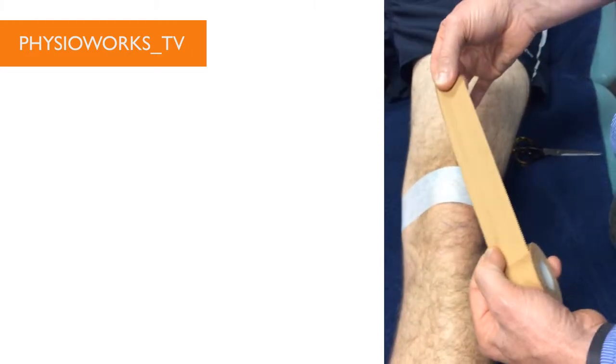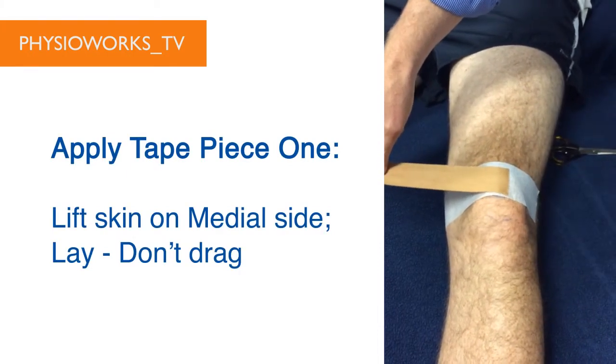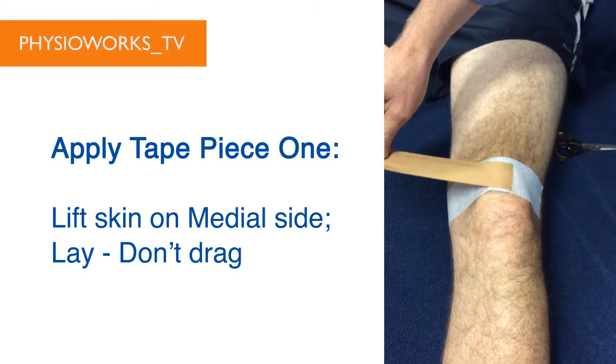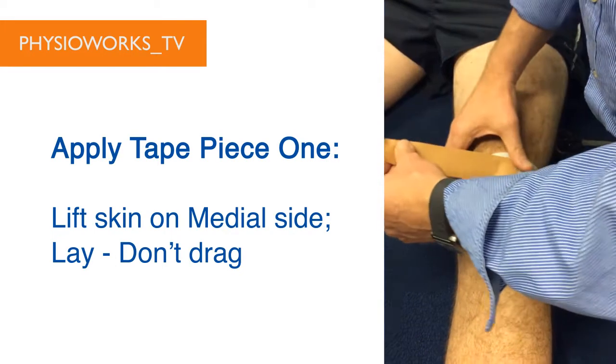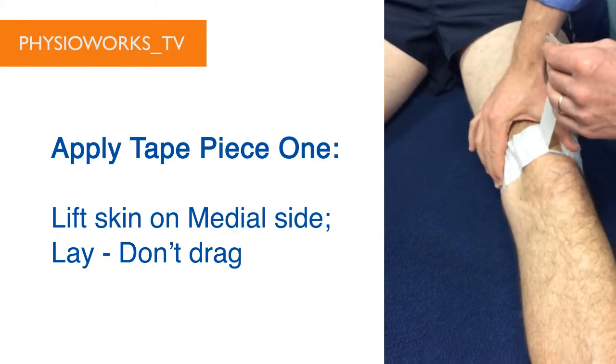You get two pieces of brown tape about two to two and a half inches long. The first bit of brown tape goes right on the top of the kneecap, but once again the top half. You don't push it across. You lift the skin up on the medial side of the knee,